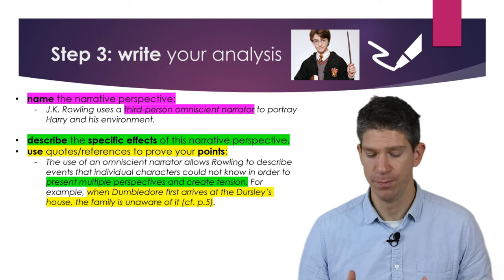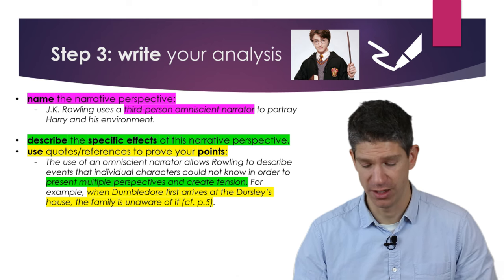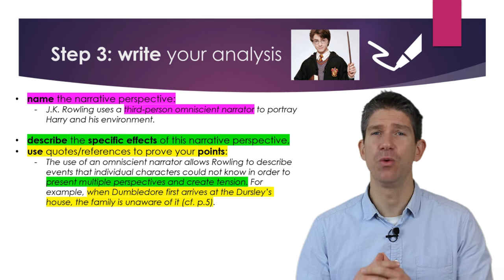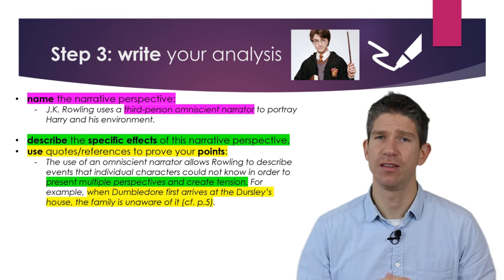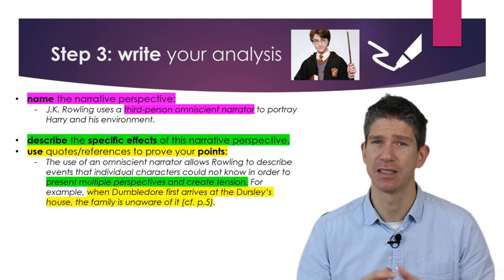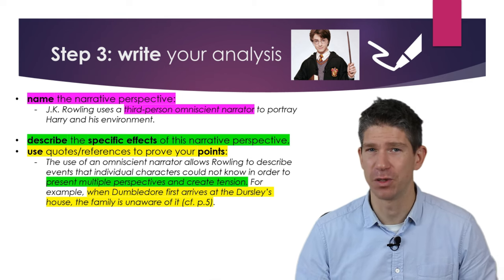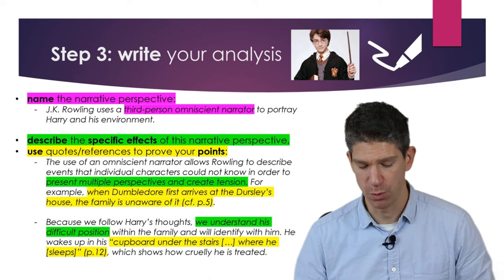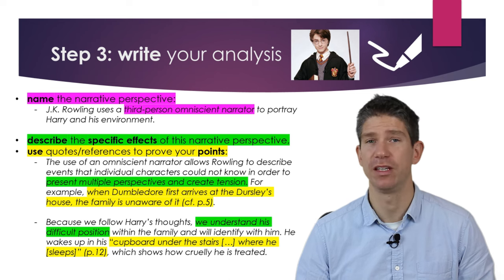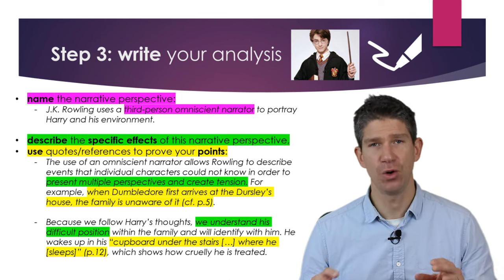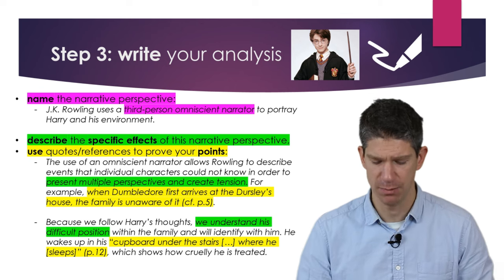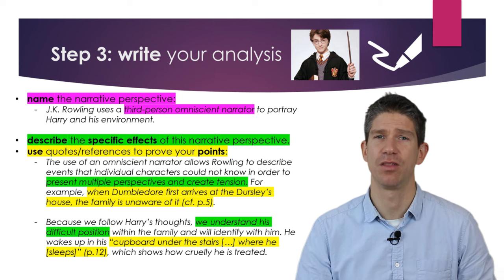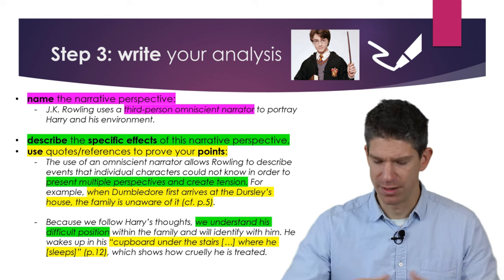For example: 'The use of an omniscient narrator allows Rowling to describe events that individual characters could not know, in order to present multiple perspectives and create tension.' When Dumbledore first arrives at the Dursleys' house, the family is unaware of it, so we as readers know things the individual characters do not — this creates suspense. And because we follow Harry's thoughts and understand his difficult position in the family, we identify with him. He wakes up in his cupboard under the stairs, showing how cruelly he's treated. Rowling uses the narrator to zoom in on Harry and let us know exactly what he's feeling.